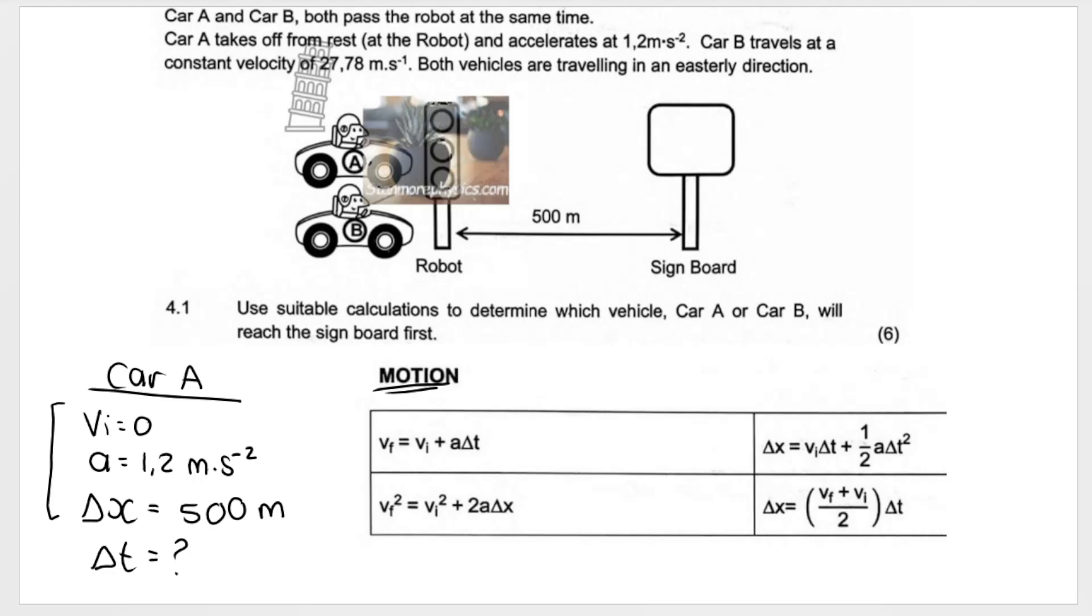I'm looking for time, so when we pick an equation, it doesn't make sense to pick this one because it doesn't have time. We're looking for time, and then we need 3 other variables. I don't have final velocity either. I don't really want to go work it out if I can just go ahead and use this formula.